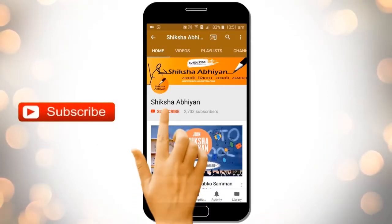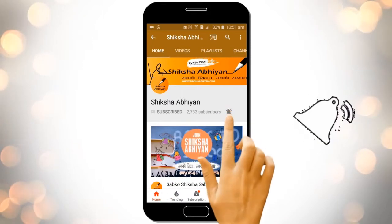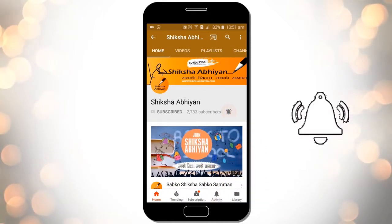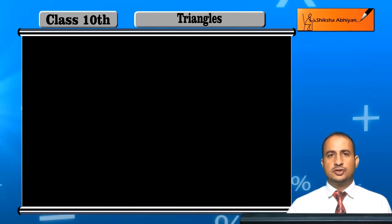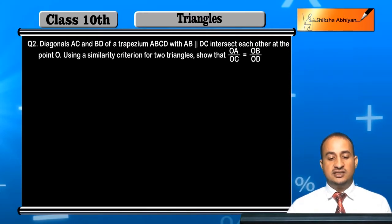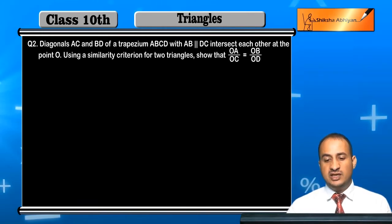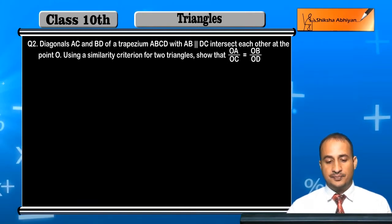Subscribe to our channel by clicking the subscribe button. Click the bell button and enjoy the latest uploads. Now student, see the second question of the exercise. Diagonal AC and BD of trapezium ABCD with AB parallel to DC.